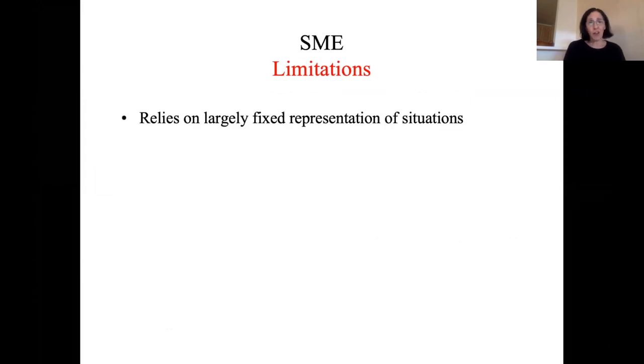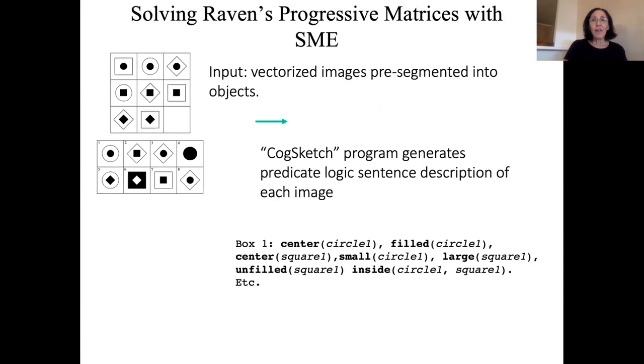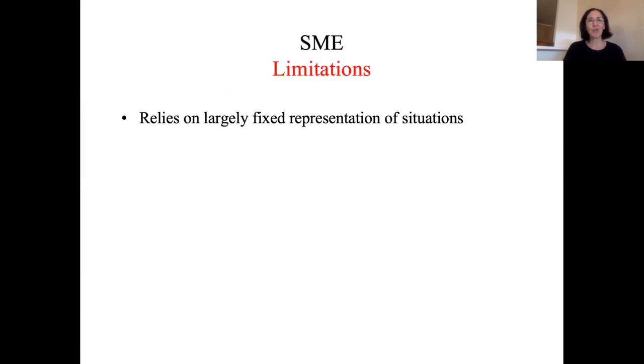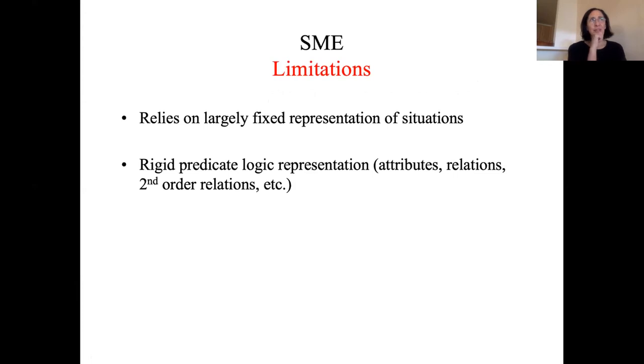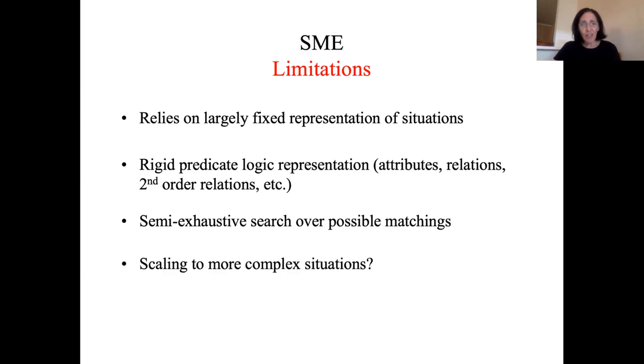It relies on largely fixed representations of situations. Once the CogSketch program creates its representations, those remain largely fixed. There can be little tweaks to them during the mapping process. And also everything is represented in a rather rigid predicate logic representation. That is, there's attributes, there's relations, there's second order relations, and so on. I can go into more detail why I think that's rigid and why that creates a problem. And also a semi-exhaustive search over possible matchings. I think it's a good question of whether this could scale to more complex situations, even in the Raven's progressive matrix world.